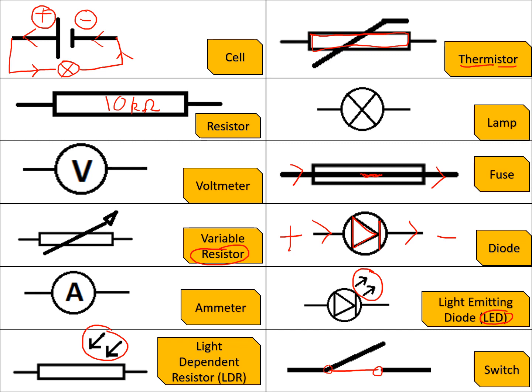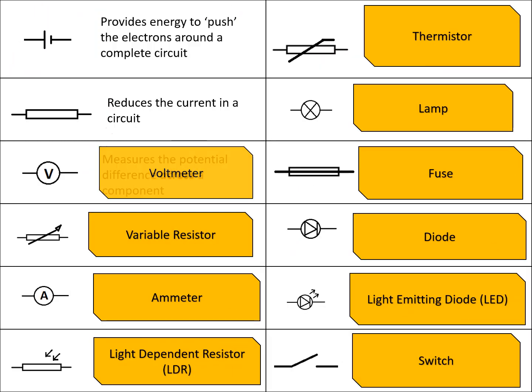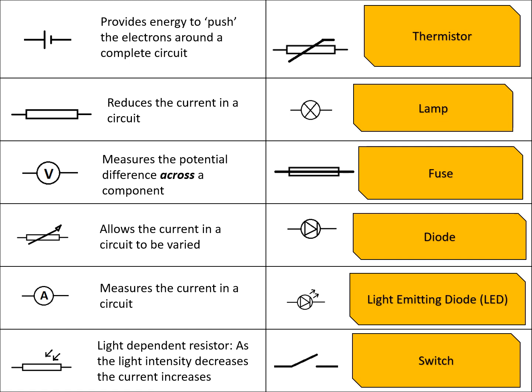So let's have a look at all their functions. As it gets brighter, the resistance decreases. So if it gets brighter, the resistance decreases, and therefore the current will increase. So anytime you want to detect how bright something is, you'd use something like this in a circuit.